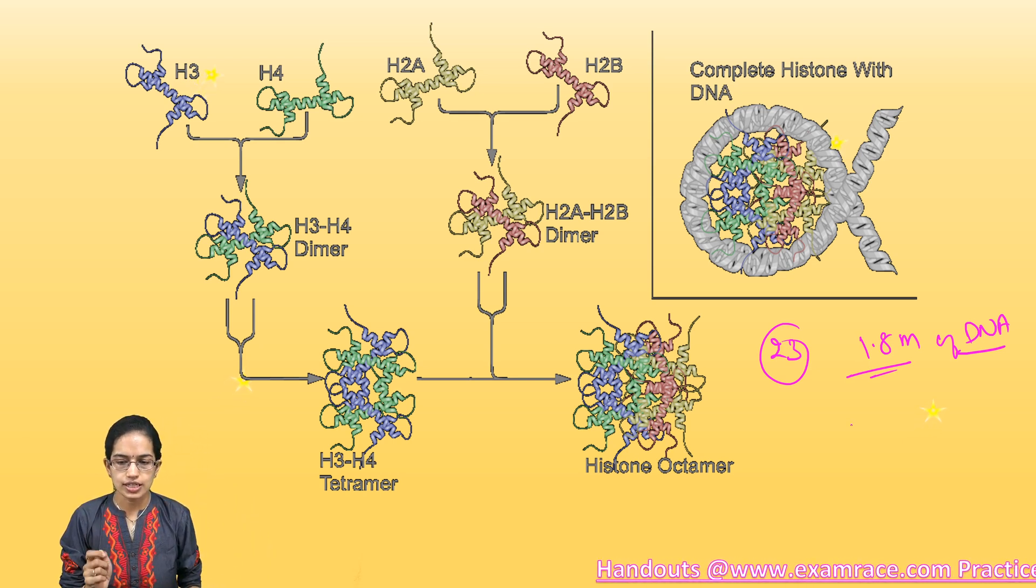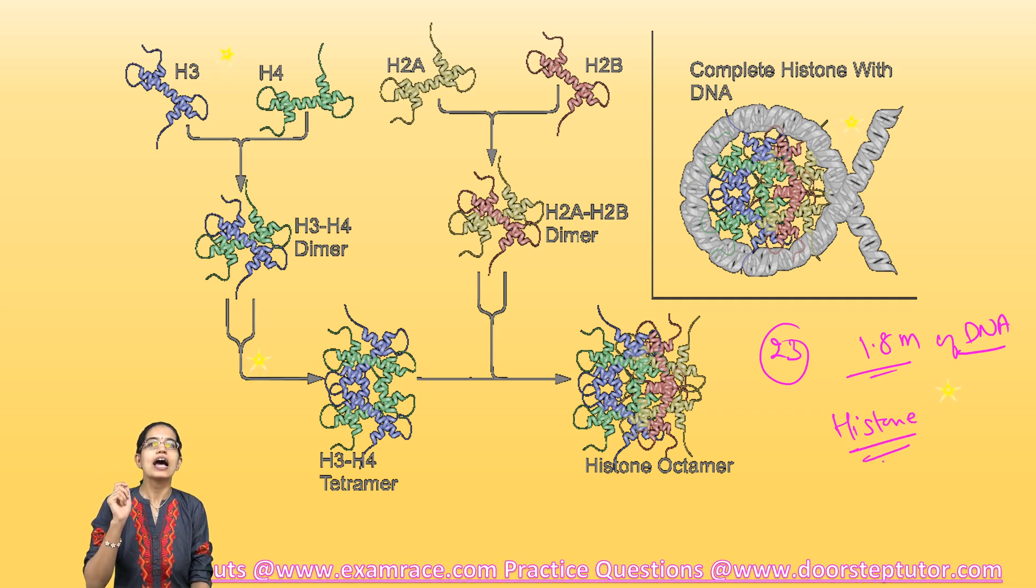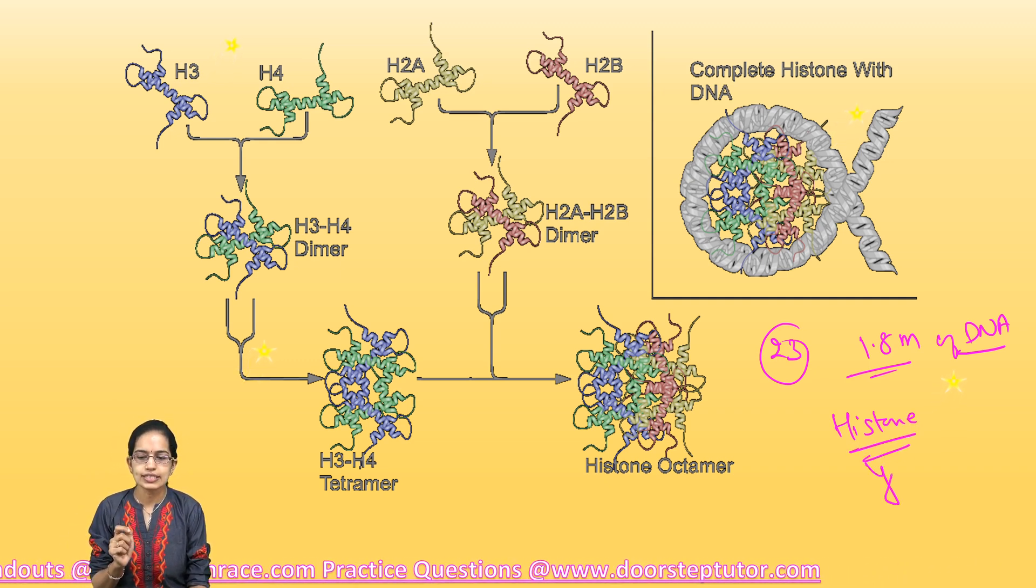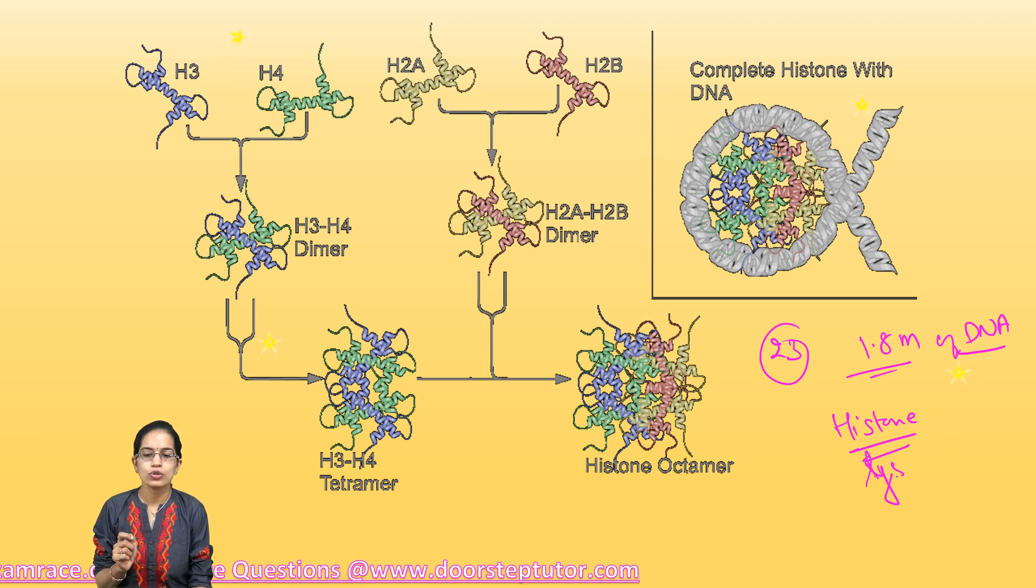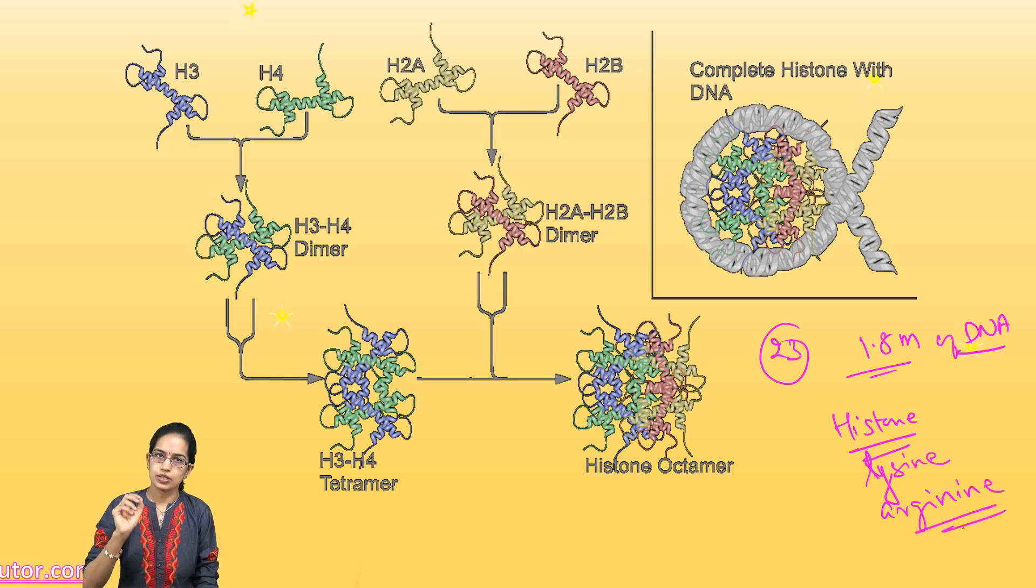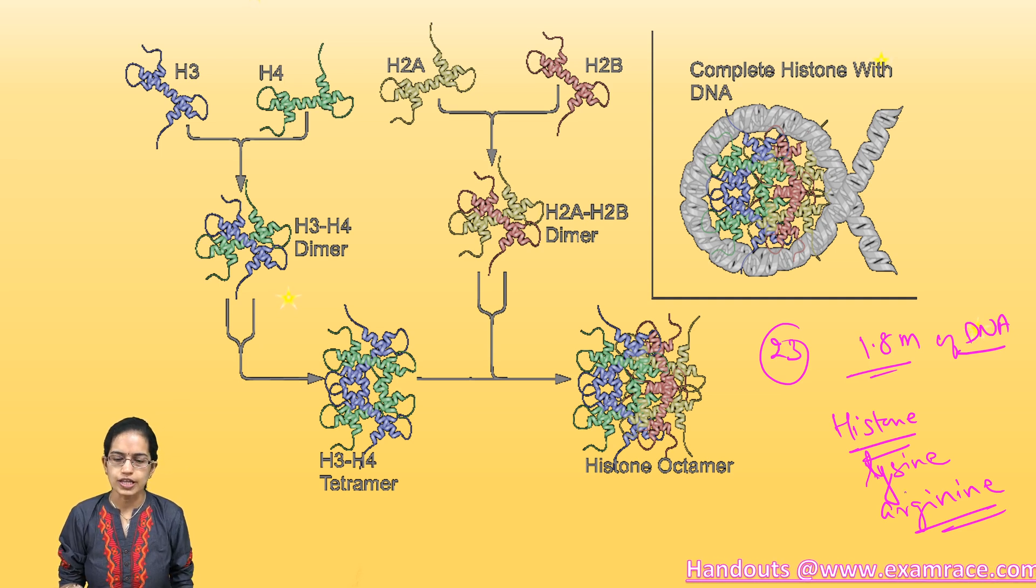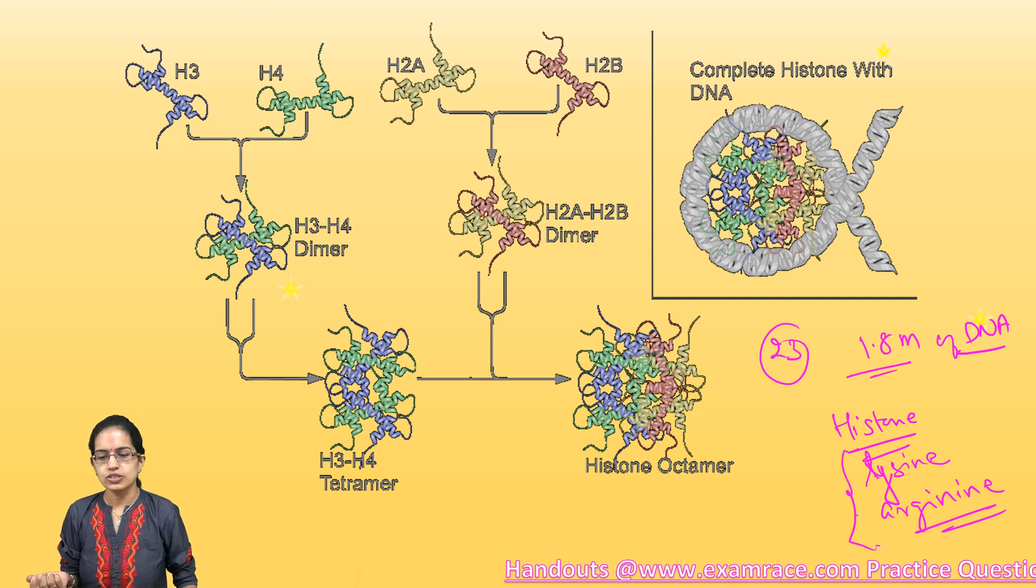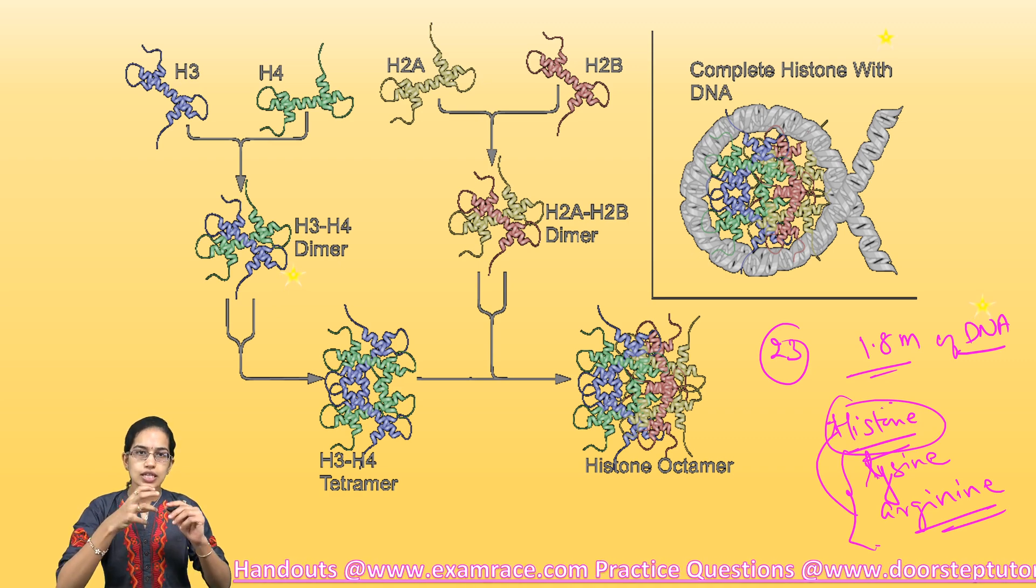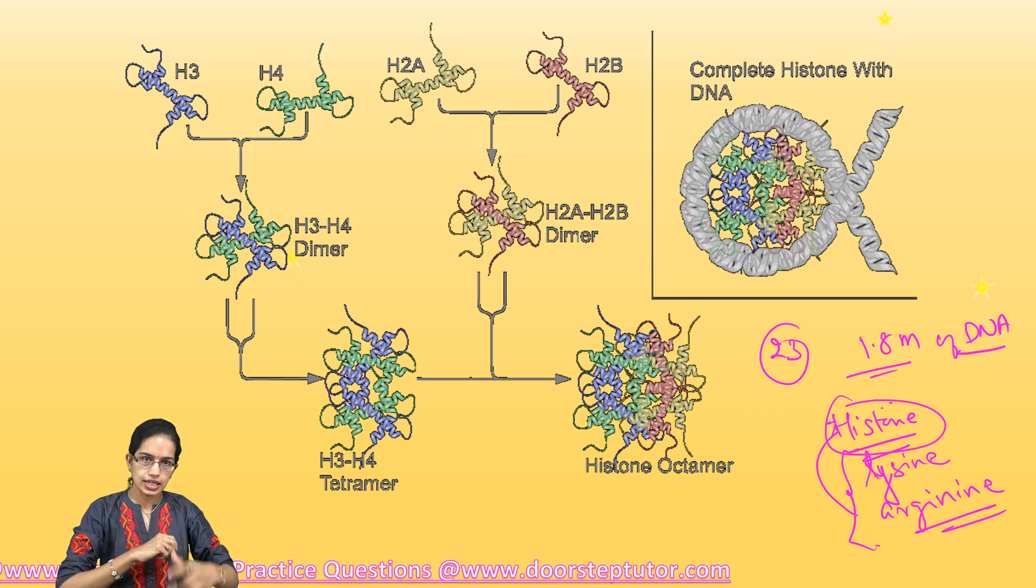Histone is the basis for mainly the lysine and arginine. Now lysine or arginine, both of those are important because both of these are alpha amino acids which are the basis for biosynthesis of protein.